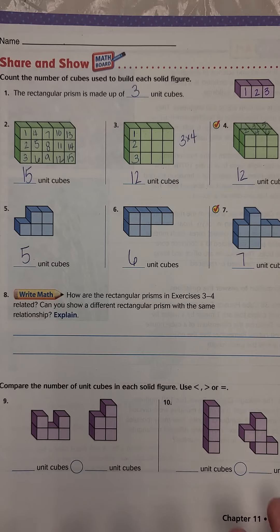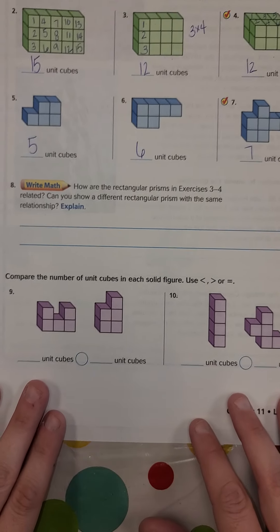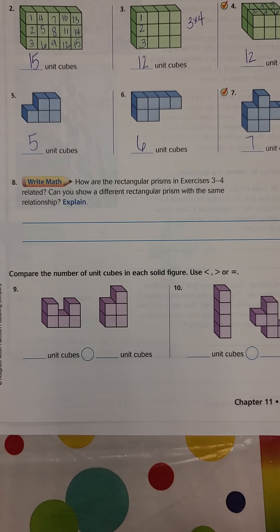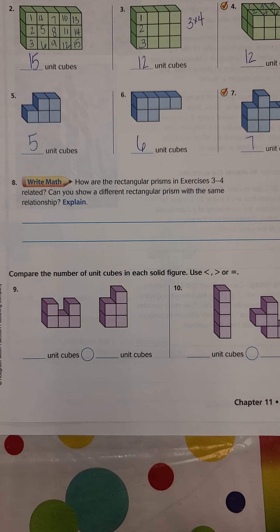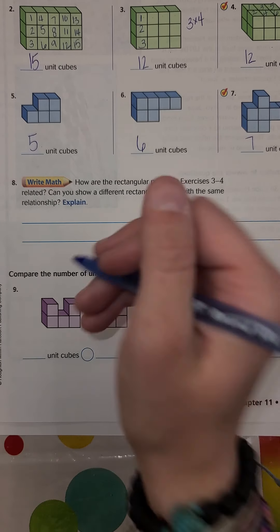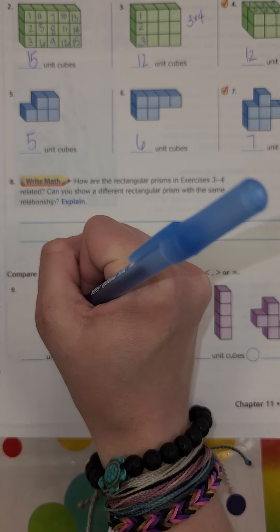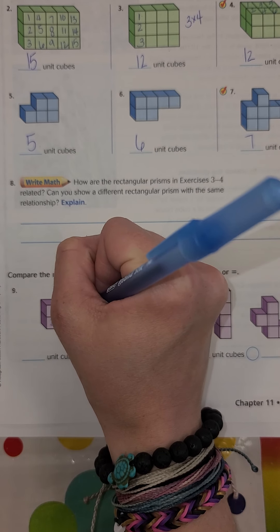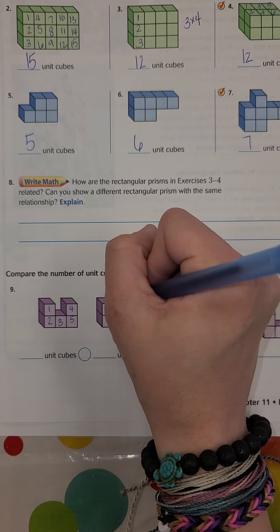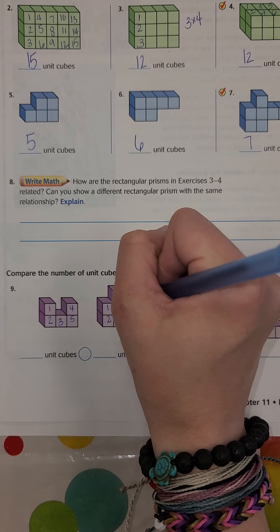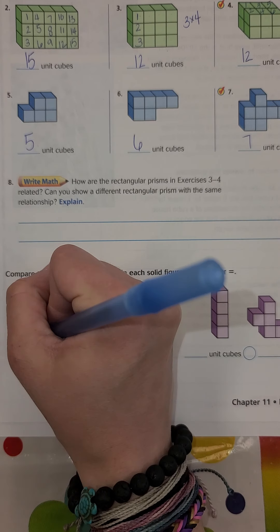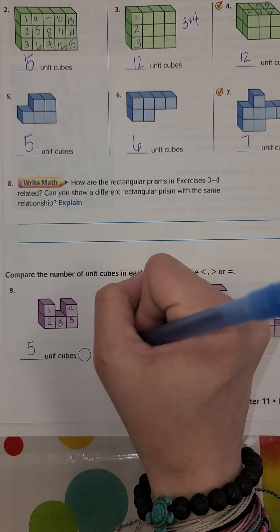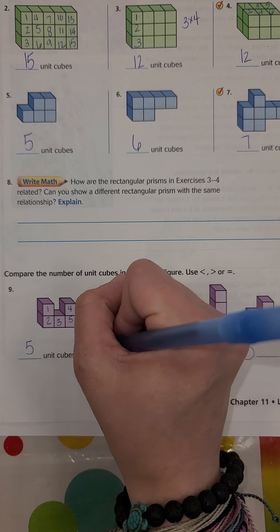All right. So now let's look at nine and ten at the bottom. This one says compare the number of unit cubes in each figure, use less than, greater than, or equal to. So let's go ahead and do that. We have one, two, three, four, five right here. And we have one, two, three, four, five over here. So five unit cubes and five unit cubes are equal.